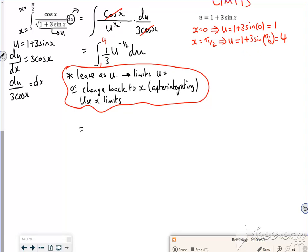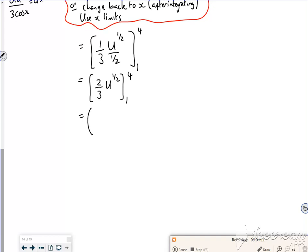Right, so if I integrate it, it's a third u to the half over a half. If I tidy it up, divide by a half is times by 2. So I've got two thirds u to the power of a half minus two thirds of one to the power of a half. So what's that? It's going to be four thirds minus two thirds is two thirds.